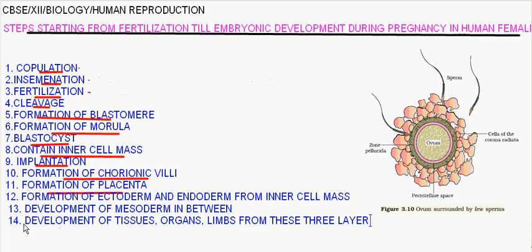Another type of cell is present called stem cell, which leads to formation of all the organs and limbs. Stem cells can proliferate or differentiate into any type of cell.